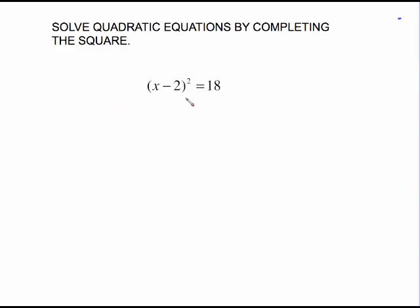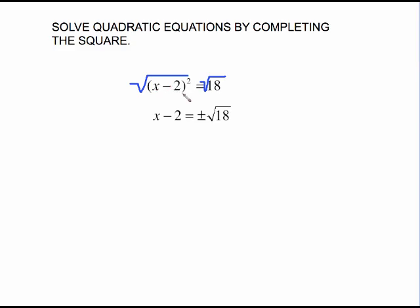This says x minus 2, quantity squared, equals 18. If you have something squared equals whatever — it doesn't matter what this number is over here — you can solve by taking the square root of both sides. If you take the square root of x minus 2 squared, you get x minus 2. When you solve by taking the square root, remember you pick up a plus or minus.